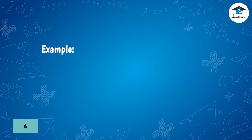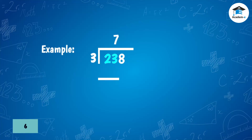Example: divide 238 by 3. Divide the hundreds digit by the divisor — no group of three in 2, so move to the right and try a bigger number. Divide 23 by 3, then subtract the product of 3 and the partial quotient 7 from 23.